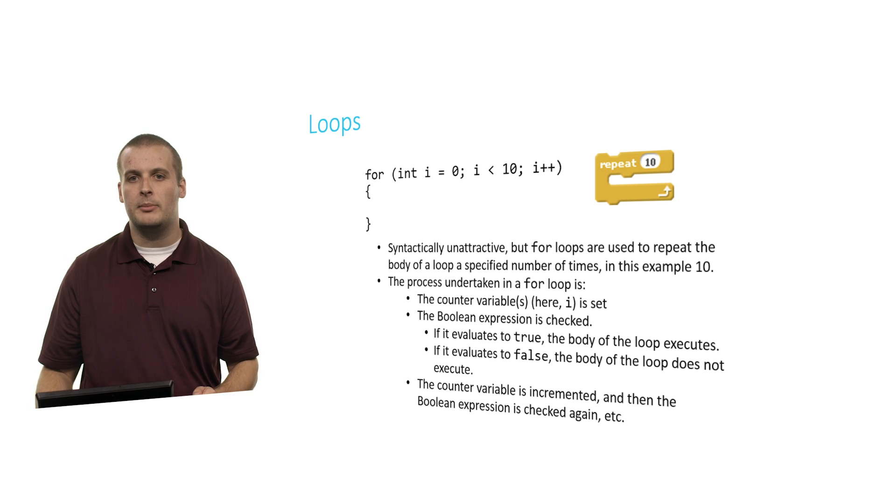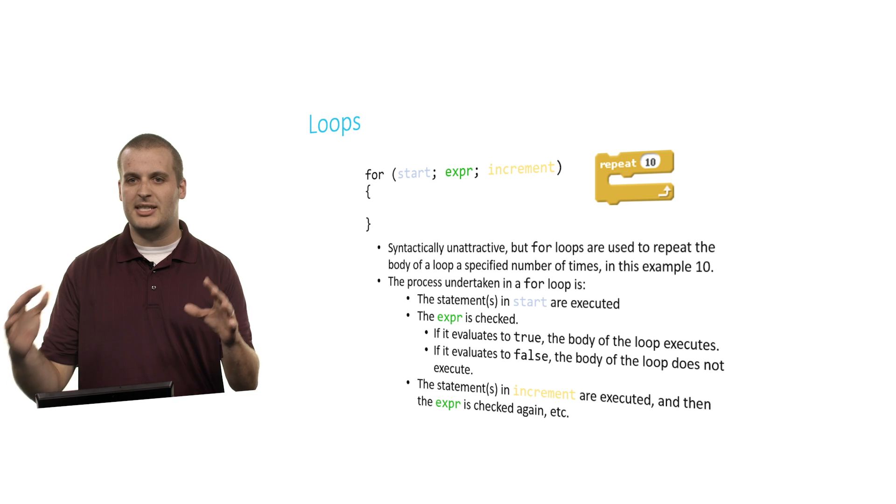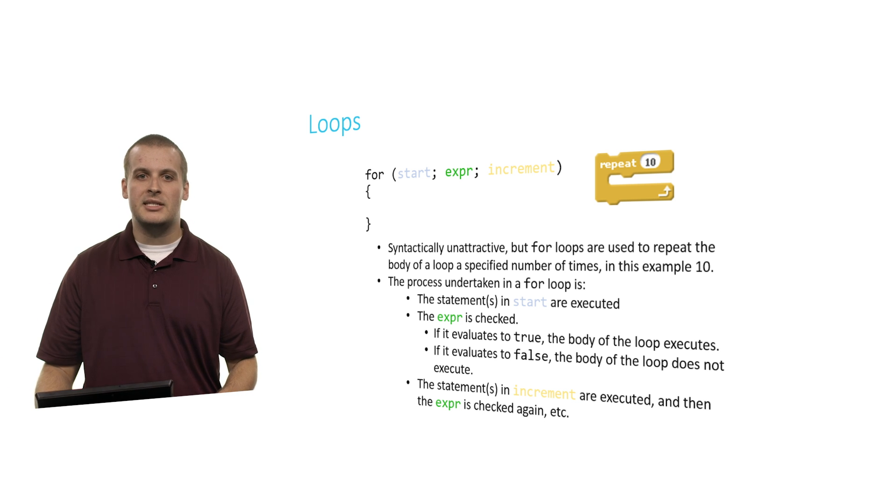Now taking away the actual code and putting it in some general statements, here's what happens. All of the statements in start are executed first. You might have more than one. Then the Boolean expression is checked. If the expression evaluates to true, execute the body of the loop one time. If the expression evaluates to false, we're done. We don't execute the body of the loop at all. After we've executed the body of the loop one time, we then do what is in the increment part there, which is usually going to be something like i++ or something like that that modifies a counter variable. Then after we increment, we check the expression again and repeat those steps over and over and over until the expression is no longer true.